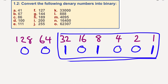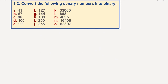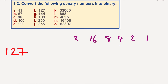Now let's do 127. I'll put in the numbers across the top: 1, 2, 4, 8, 16, 32, 64, 128. I can see straight away that I can stop there.